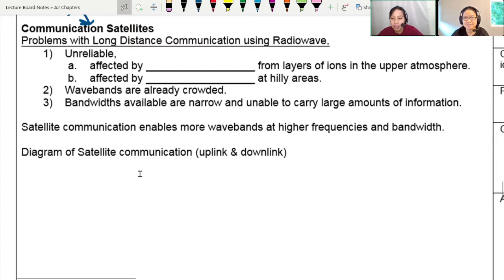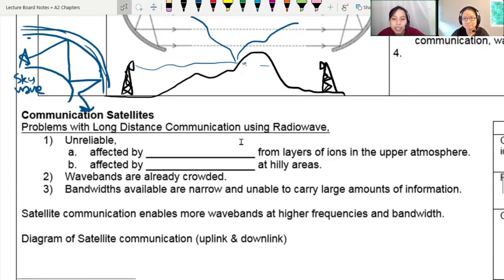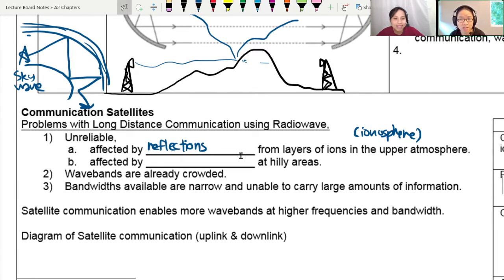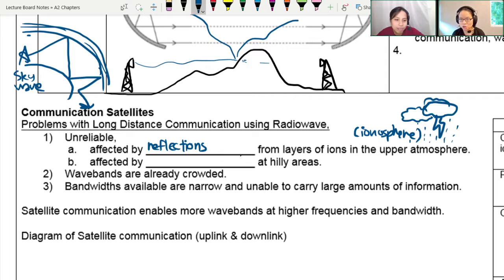So problem with long distance, especially if you're bouncing because it is affected by reflection from layers of ions in the upper atmosphere, also known as the ionosphere. You want to bounce, but cannot very hard. Suddenly thunderstorm got extra ion there, and everything cannot communicate already. Not consistent.